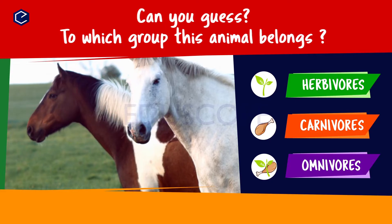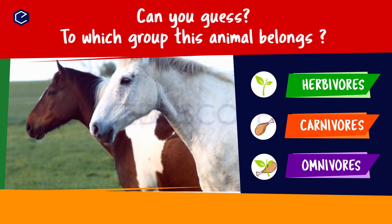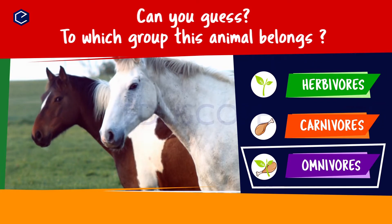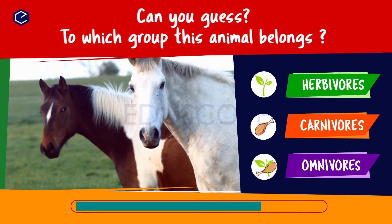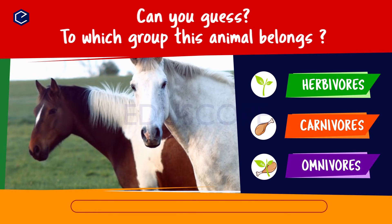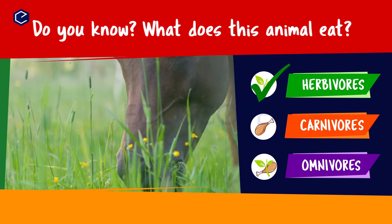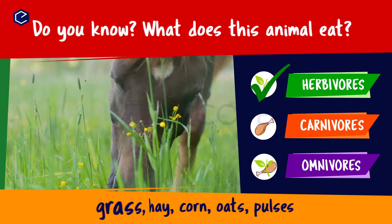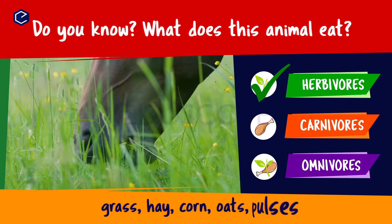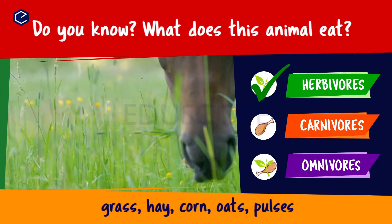Can you guess to which group this animal belongs? Herbivores, carnivores, omnivores. Do you know what this animal eats? A horse eats grass, hay, corn, oats, pulses. So horse is a herbivore.